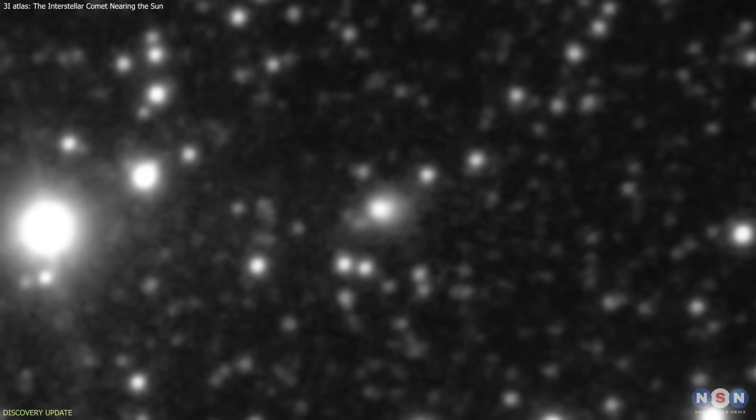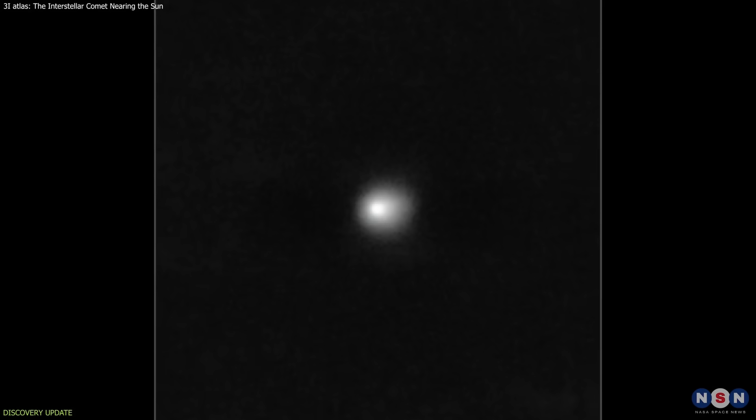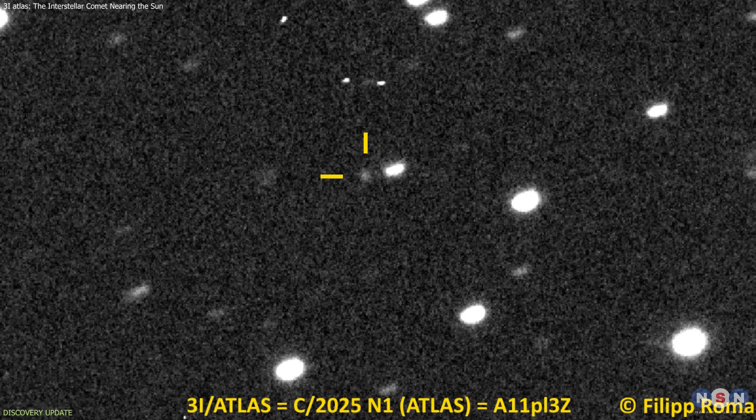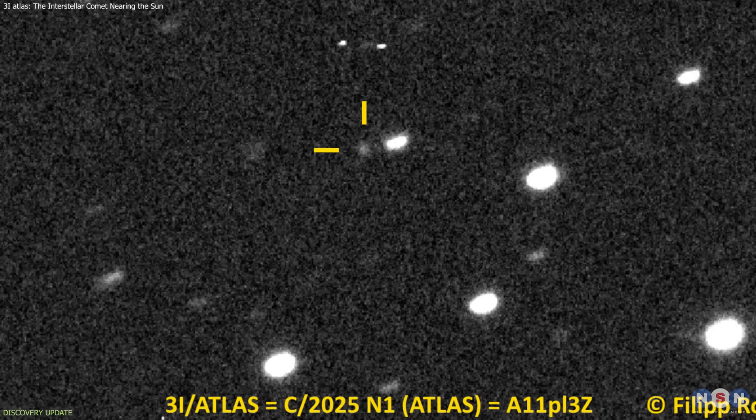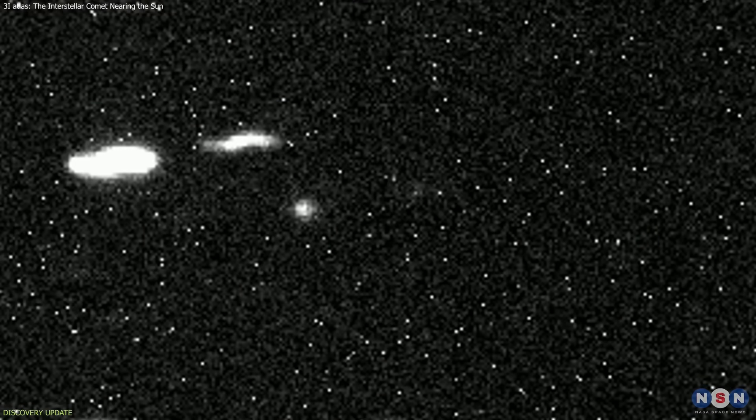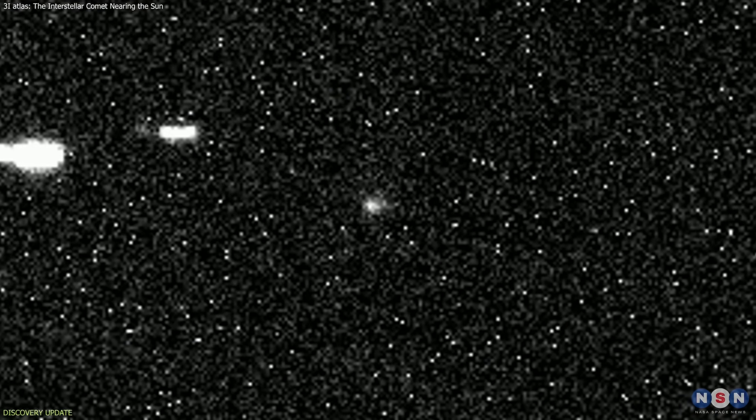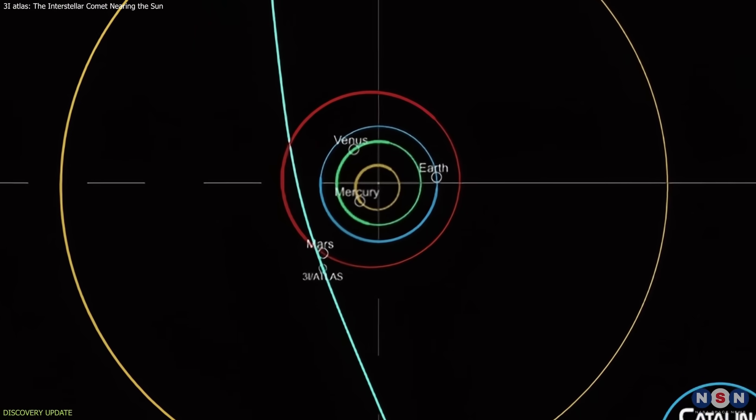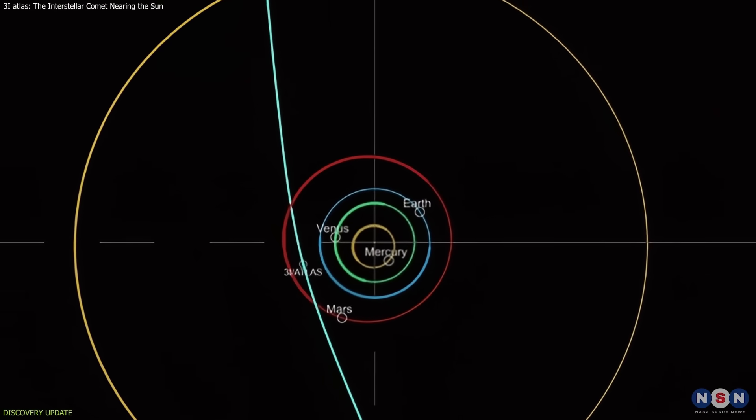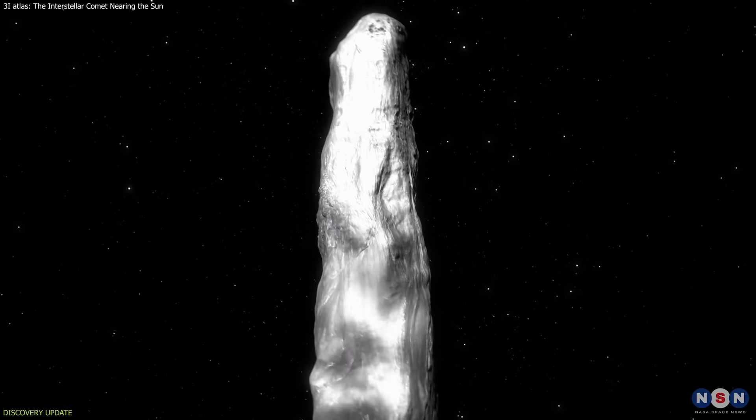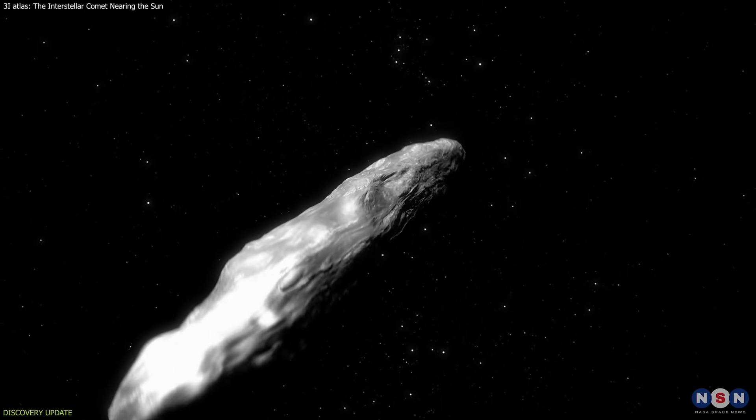The story of 3i Atlas began in July 2025, when astronomers using the Atlas survey in Hawaii detected a faint object moving too fast to be bound by the Sun's gravity. Its hyperbolic orbit confirmed it as the third recorded interstellar object, after Oumuamua in 2017 and 2i Borisov in 2019.